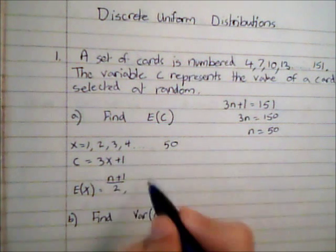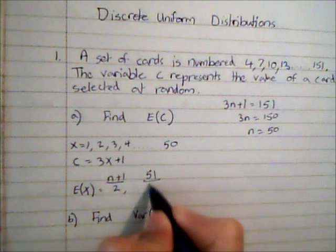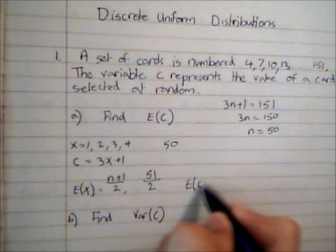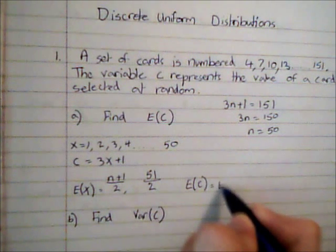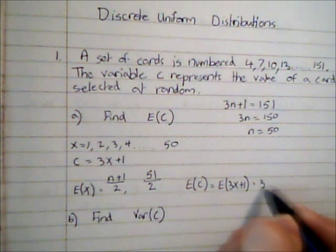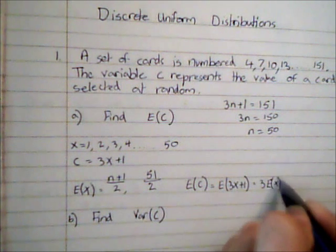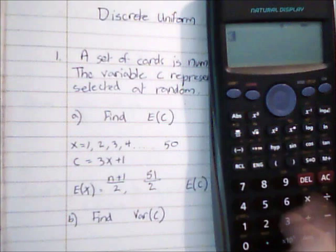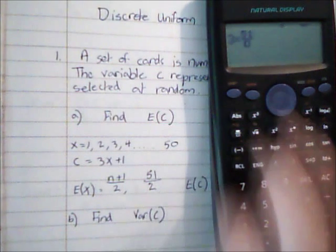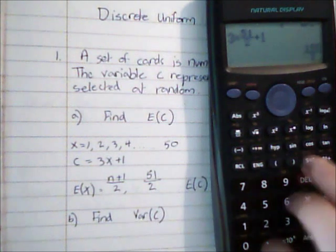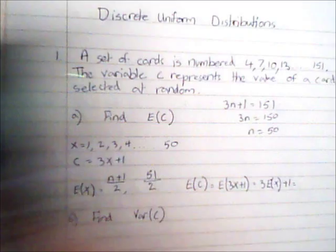So E of C we then know is equal to E of 3x plus 1, which equals 3E(x) plus 1. It's 3 multiplied by 51/2 plus 1, which gives me an answer of 77.5.